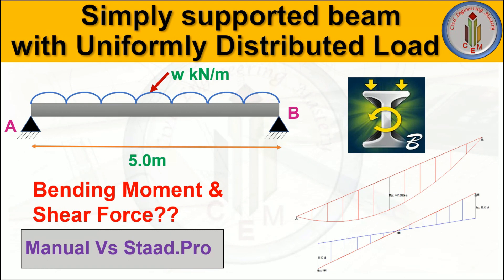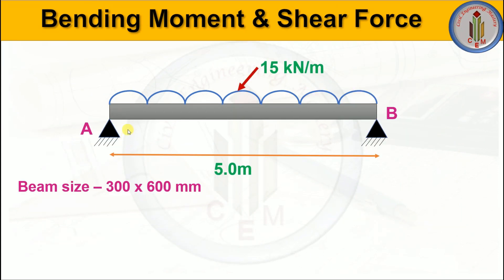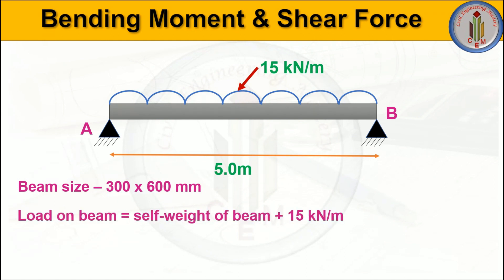Without any delay, let's begin. Let's consider a simply supported beam with a span of 5 meters and a uniformly distributed load of 15 kilonewton per meter applied on the beam. The size of the beam is 300 by 600 mm.